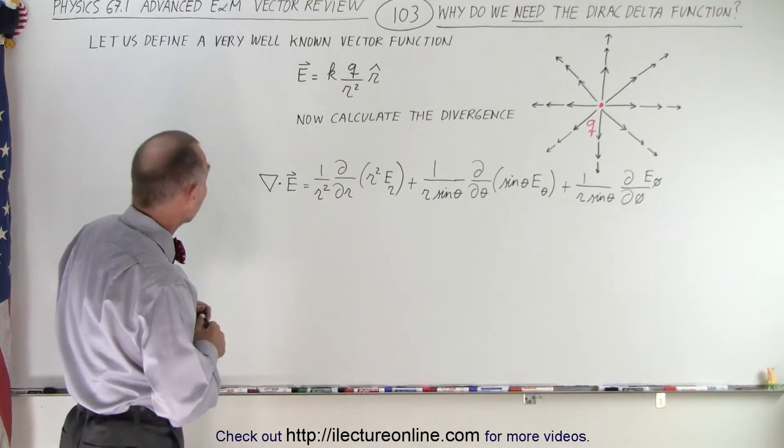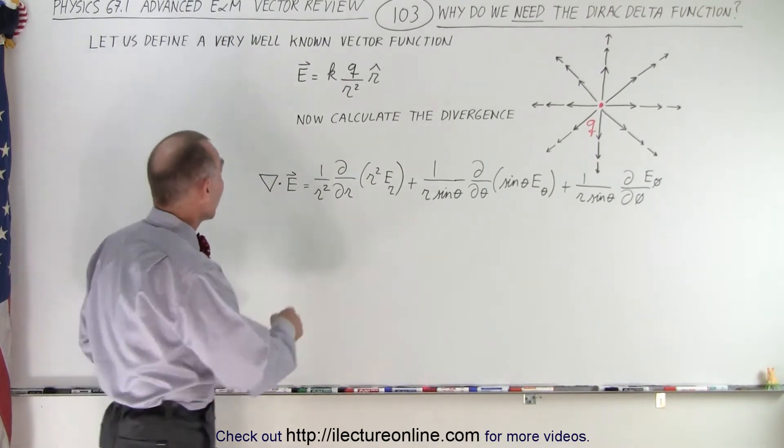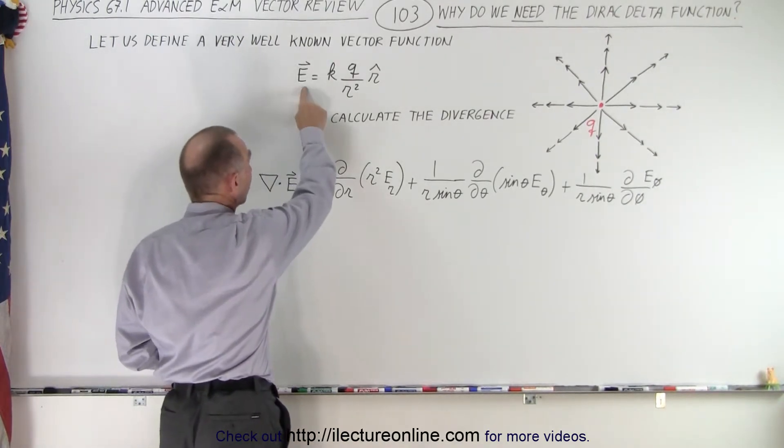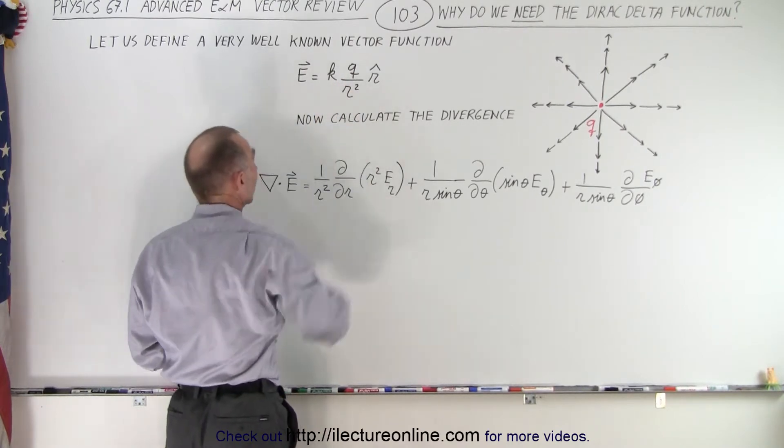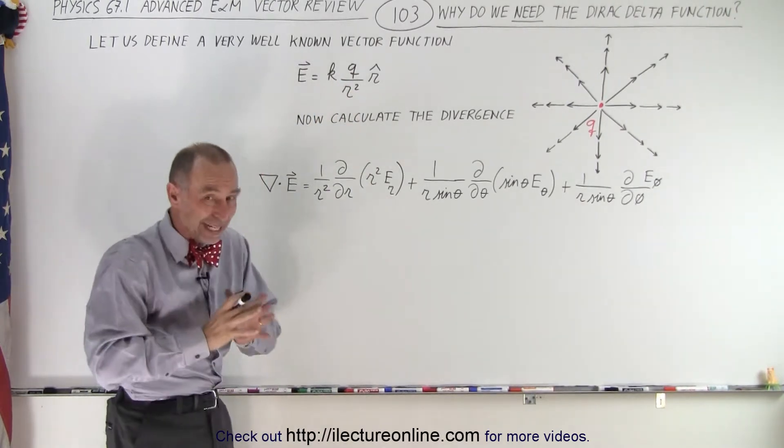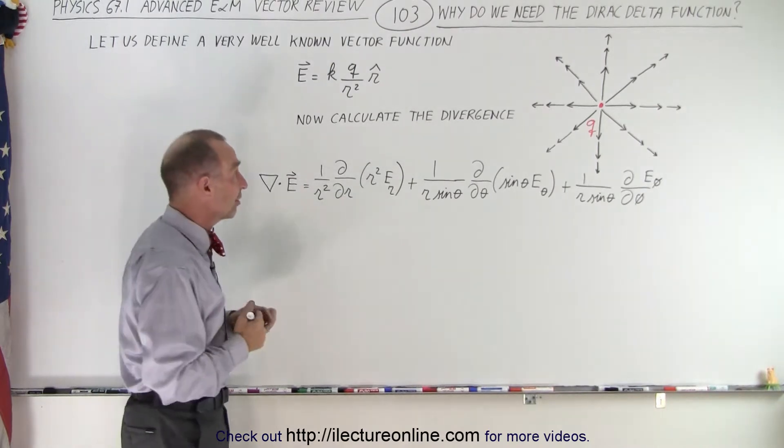So here, let's take a look at this. Let's say we have the function of the electric field of a point charge, which is equal to kq over r squared in the r direction, meaning the radial direction, spherical direction, everywhere outward.